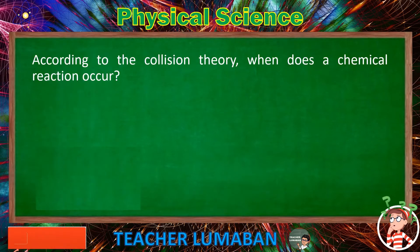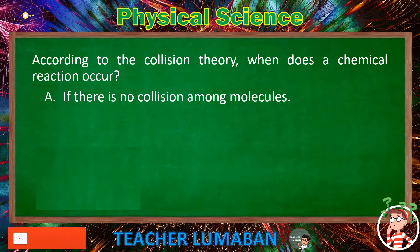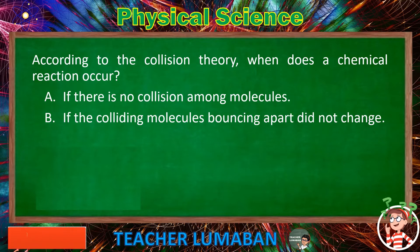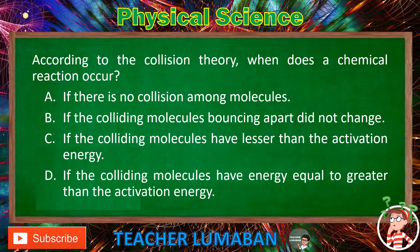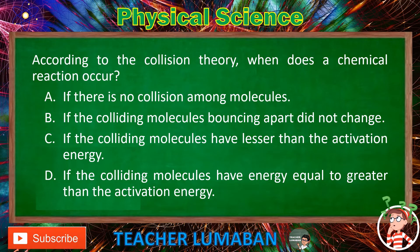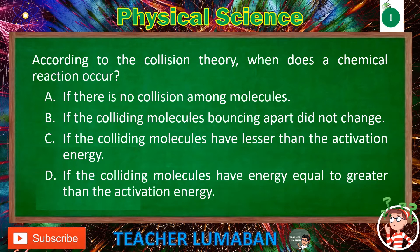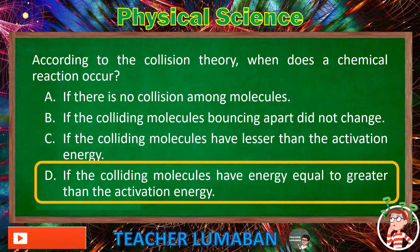According to the collision theory, when does a chemical reaction occur? Letter A: if there is no collision among molecules. Letter B: if the colliding molecules bouncing apart did not change. Letter C: if the colliding molecules have lesser than the activation energy. Letter D: if the colliding molecules have energy equal to or greater than the activation energy. The correct answer is Letter D — if the colliding molecules have energy equal to or greater than the activation energy.